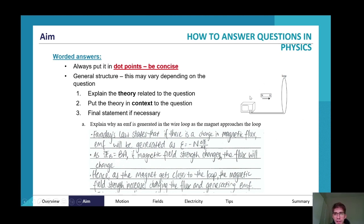On the figure on the top right hand side, you are going to see a magnet with the northern pole and south pole and a loop. The question is: explain why an electromagnetic force is generated in the wire loop as the magnet approaches the loop. Explain why there is a voltage, that's what EMF is.